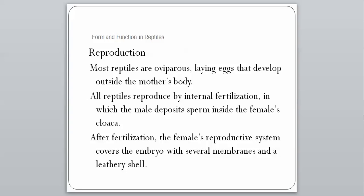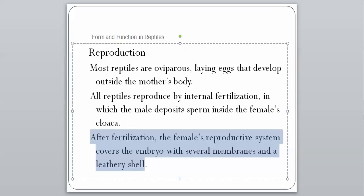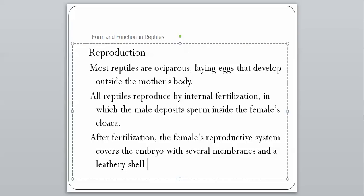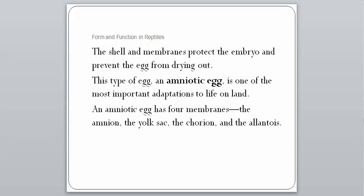After fertilization, the female's reproductive system will cover the embryo with several membranes and a leathery shell. This is really important because it enables the eggs to be laid away from or outside of the water, whereas amphibians had to lay their eggs in water because they had nothing to protect them — if laid on land, they would dry out. The shell and membranes protect the embryo and prevent the egg from drying out.